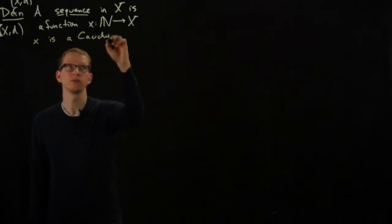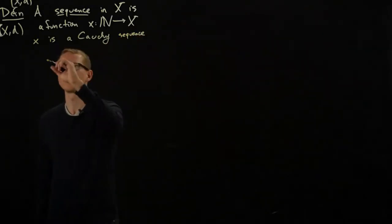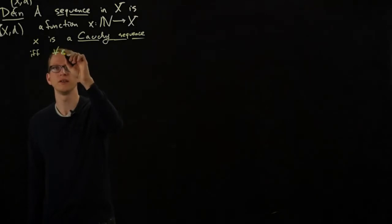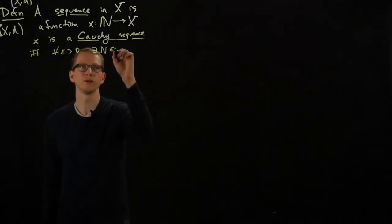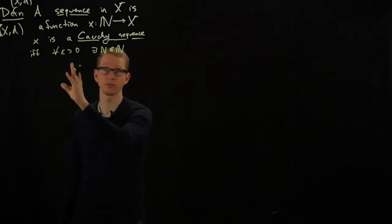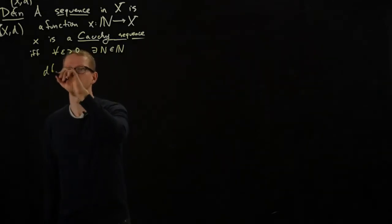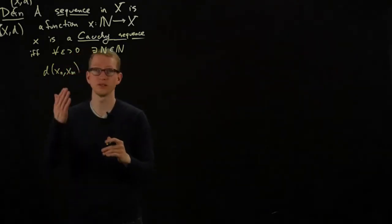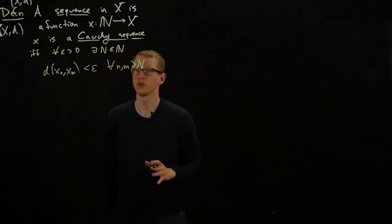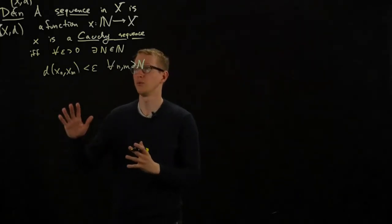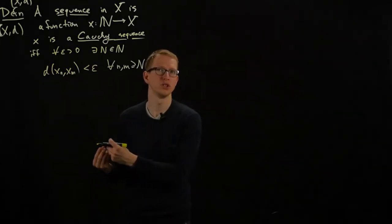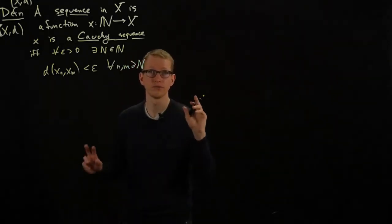X is a Cauchy sequence if and only if for all ε>0, there exists some natural number N such that the tail end of the sequence, the points inside that tail end, are close enough to each other, within an epsilon distance. Precisely: the distance between any individual piece and any other piece of that tail end is less than epsilon for all n and m greater than or equal to N. Notice there's no notion of where this sequence might be tending to. All we care about is that the individual pieces are all getting closer to each other eventually, but we don't know if this is actually converging to something.